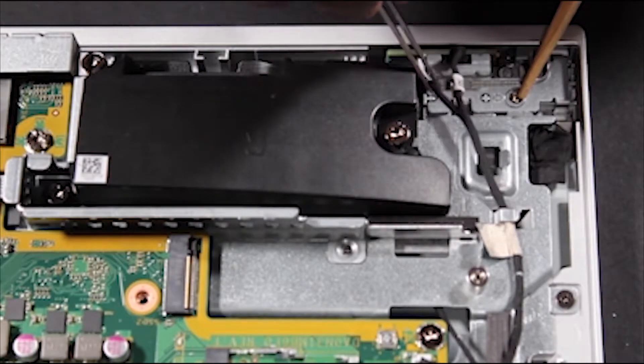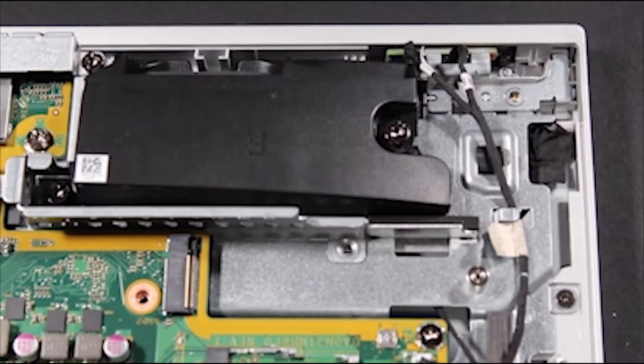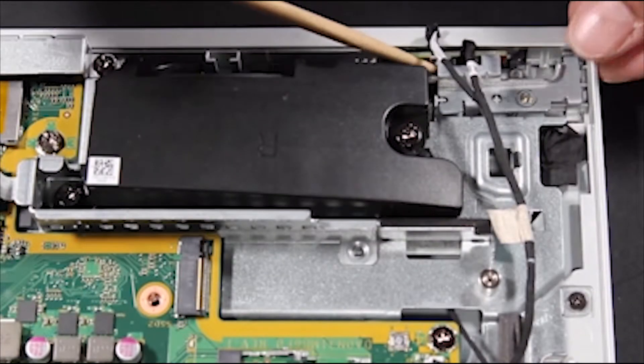Detach the fingerprint reader cable from its connector on the fingerprint reader. Partially pull out the power button board assembly.